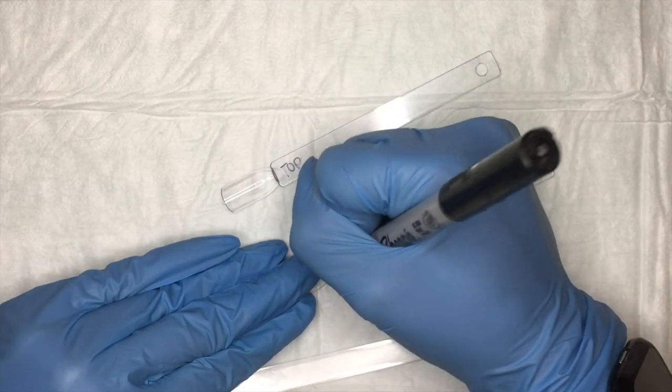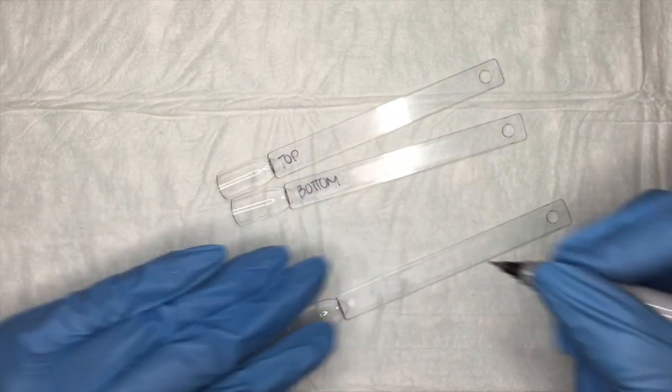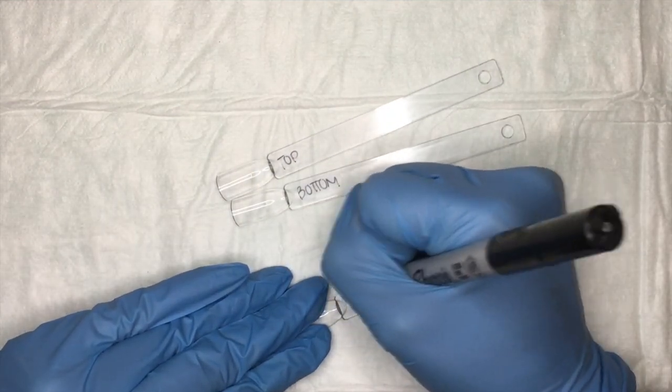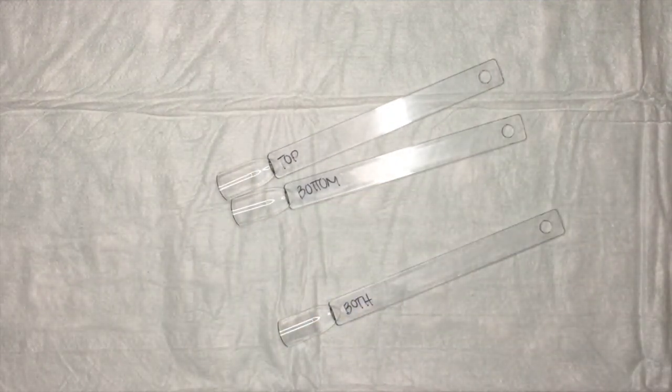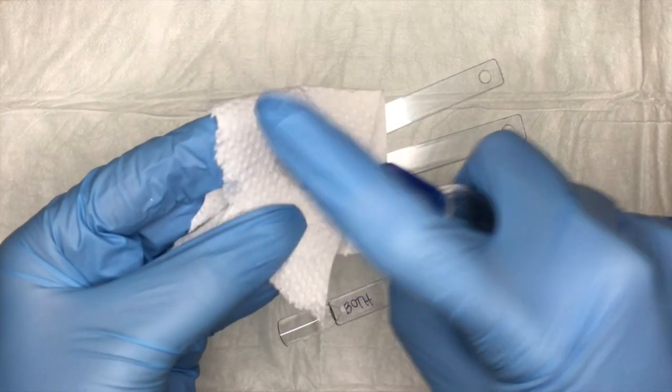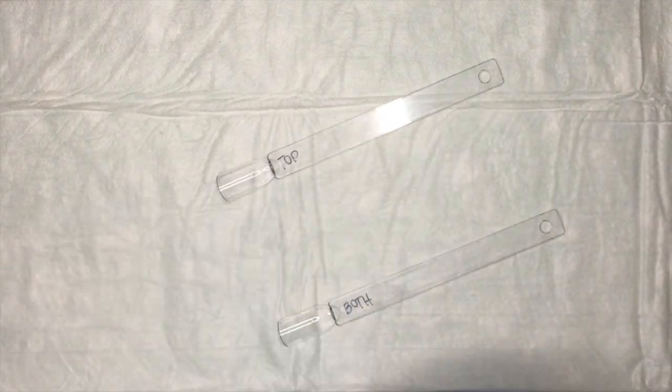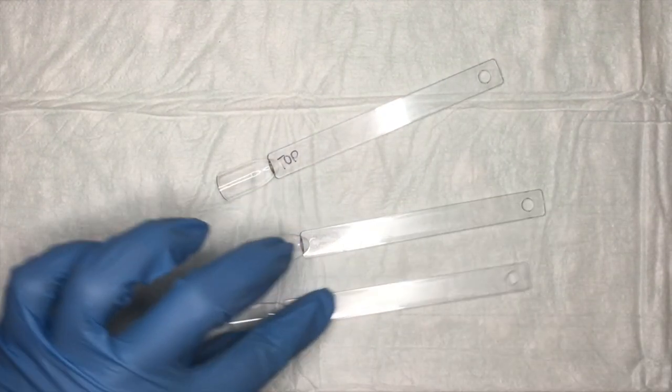So here I actually put bottom instead of under and I'm just going to show you a quick little hack. If you accidentally mess up or you just wrote the wrong word or it didn't come out the way you wanted to, you can actually just use some alcohol and a piece of napkin and just wipe it off and then you can rewrite over top.